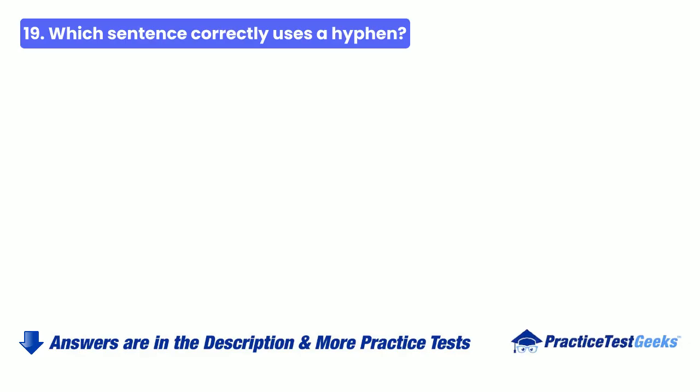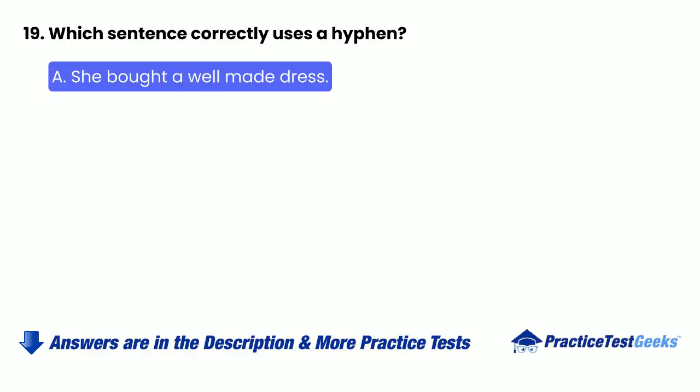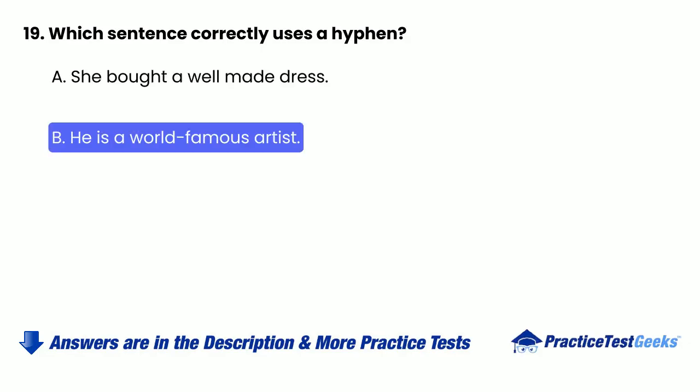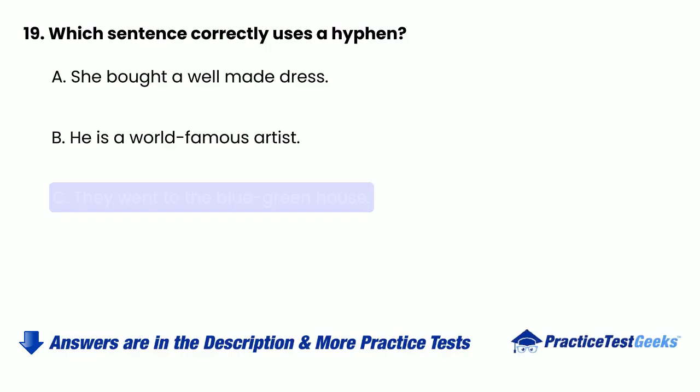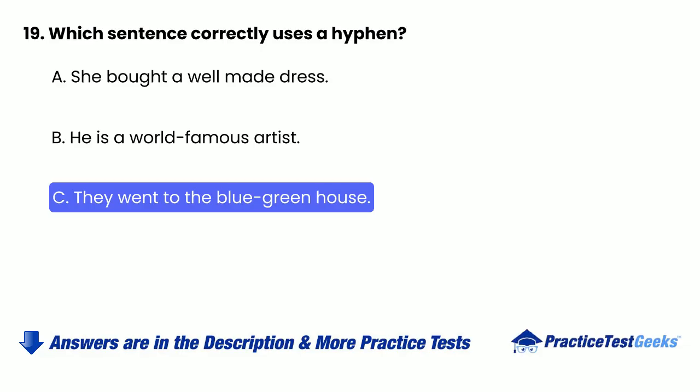19. Which sentence correctly uses a hyphen? A. She bought a well-made dress. B. He is a world-famous artist. C. They went to the blue-green house. D. The project was one-of-a-kind.